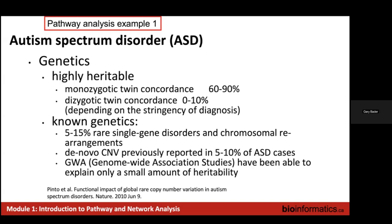Next I'm going to go through a number of different examples of pathway analysis on different types of data, so you can get a sense of the interesting results you can get from applying these methods. The first example is about autism spectrum disorder. Autism spectrum disorder has an important genetic component, with over 60% concordance in identical twin studies. At the time this project was published in 2010, about 5 to 15% of the genetics could be explained by rare gene disorders.